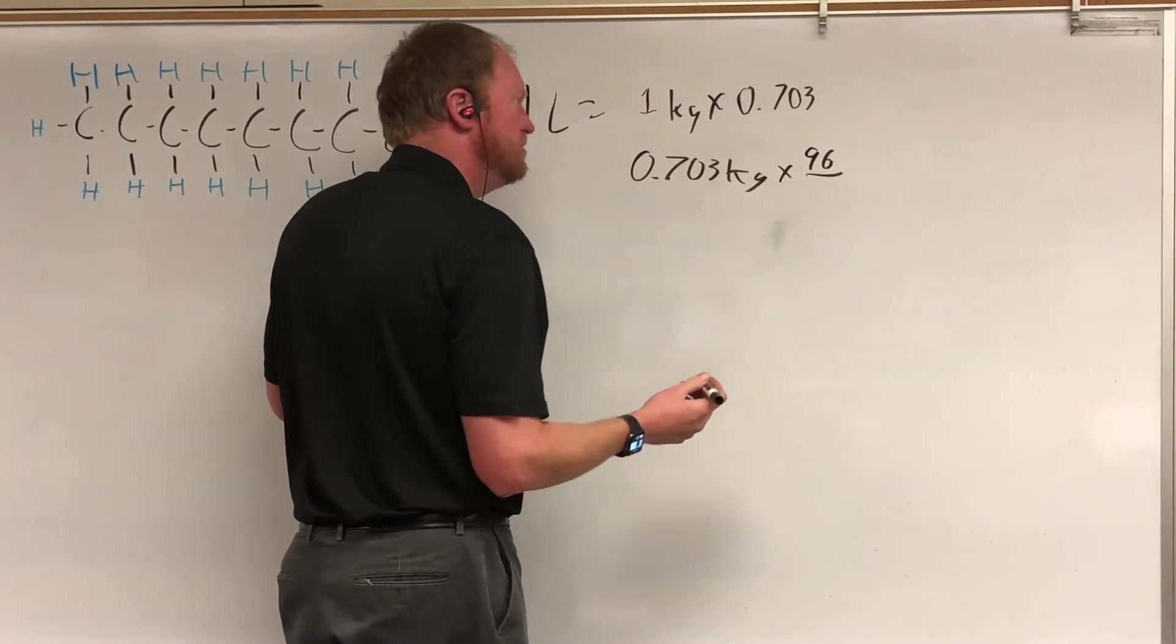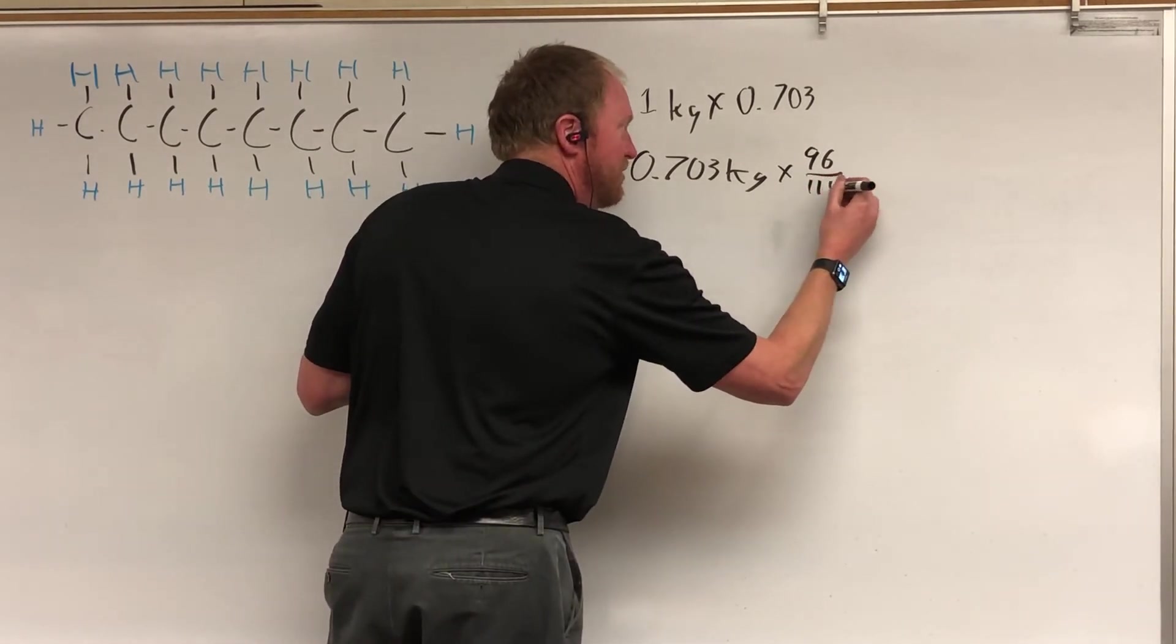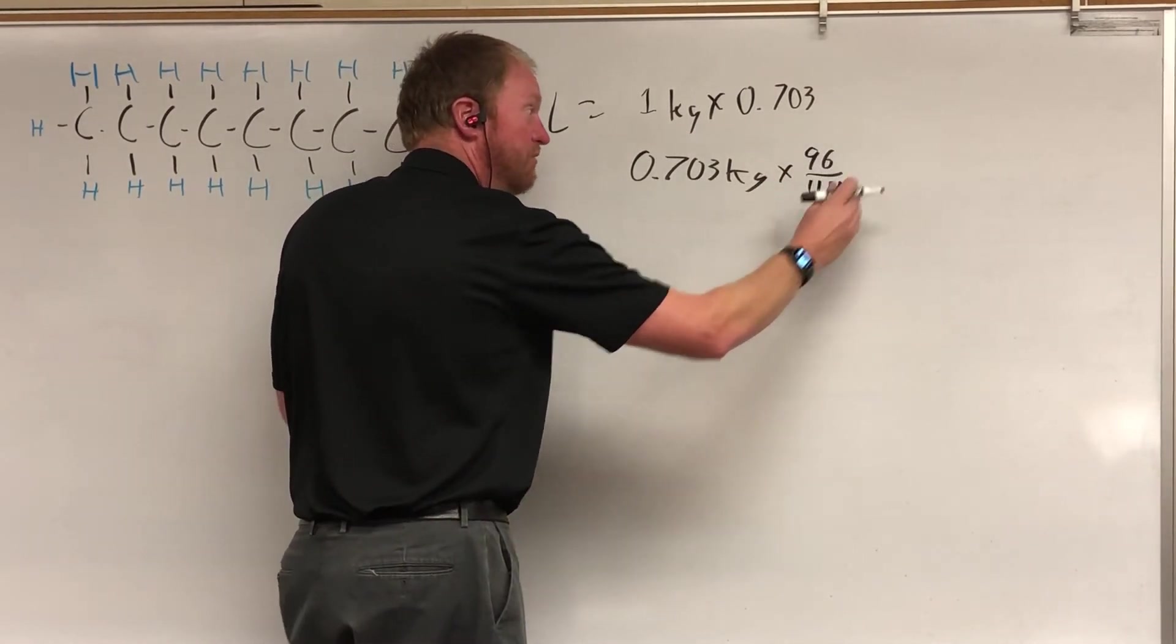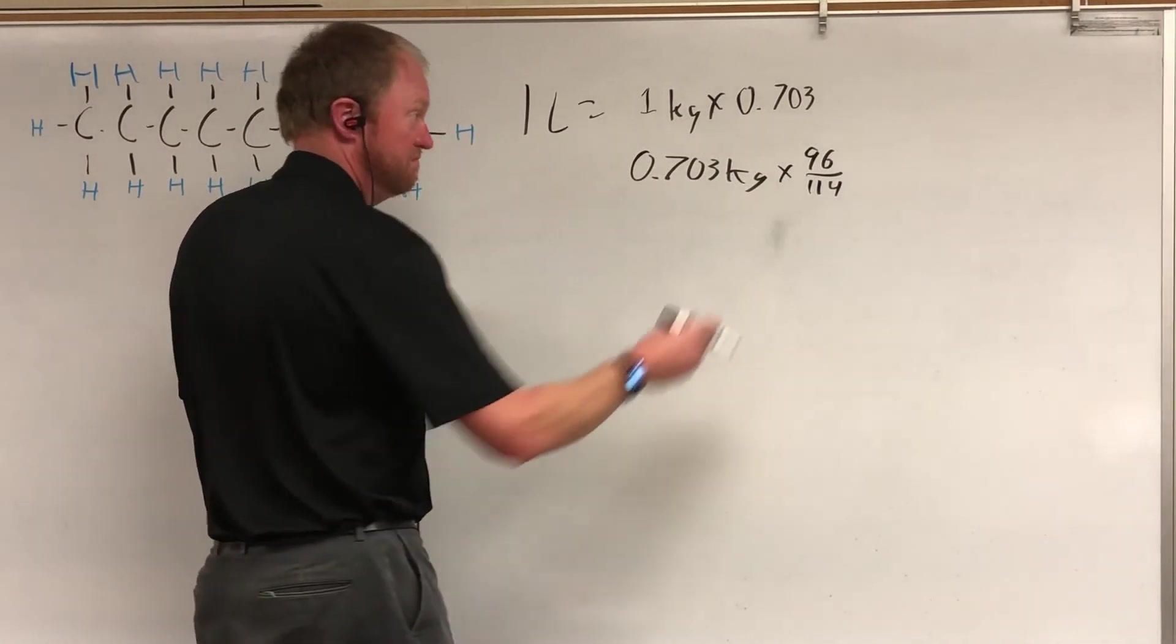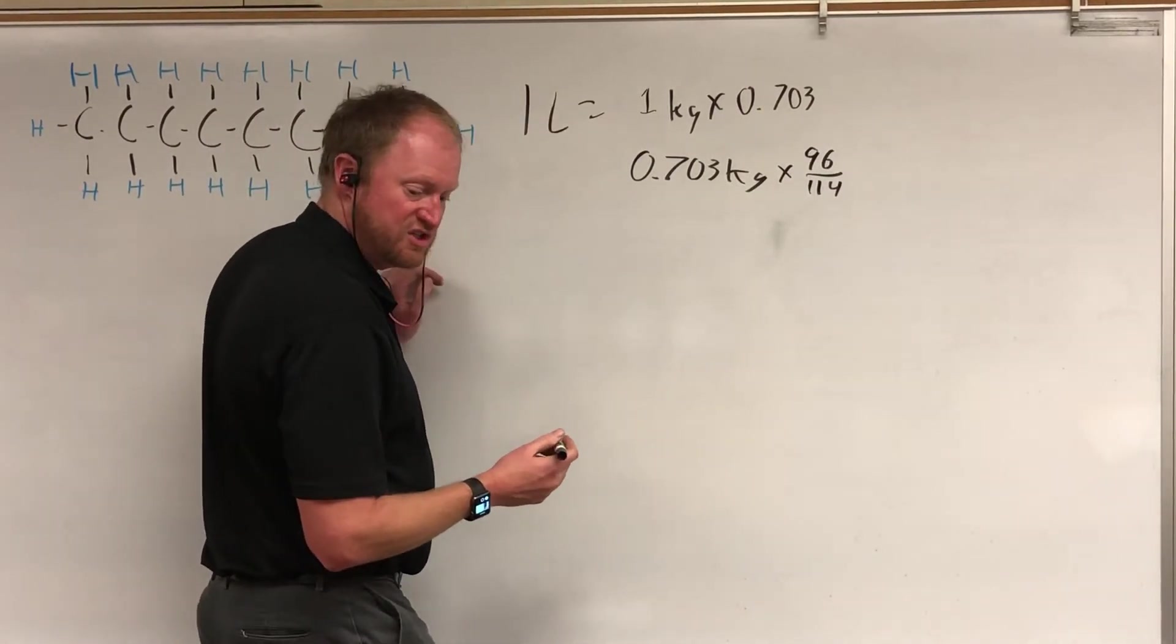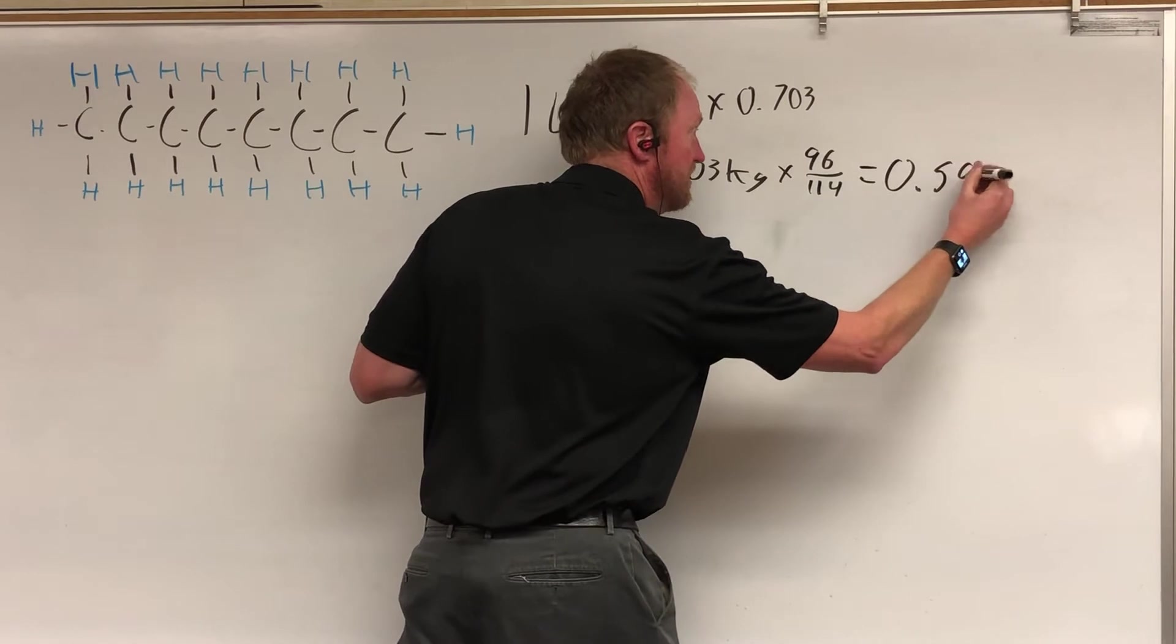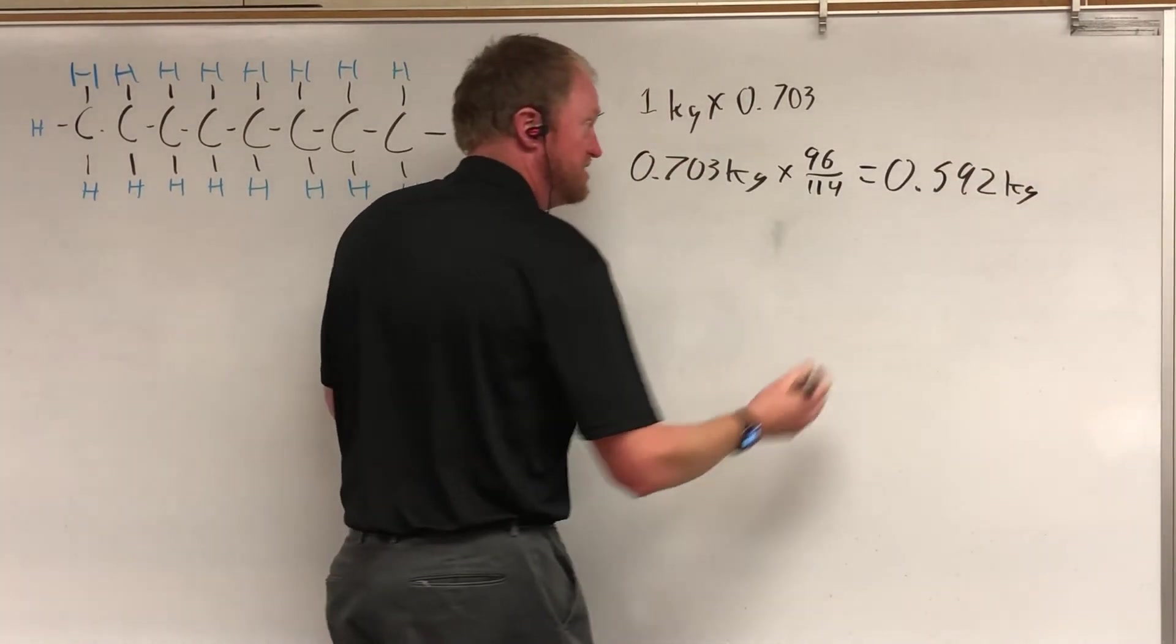Which gives you, oh boy, my mind stopped. I wrote it down, I wrote it down. 114. So 96 grams out of 114 grams for one mole of gasoline is carbon. So multiply that together and you find that of that 0.703 kilograms, you end up with 0.592 kilograms of carbon in your liter of gasoline.